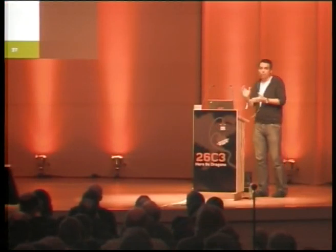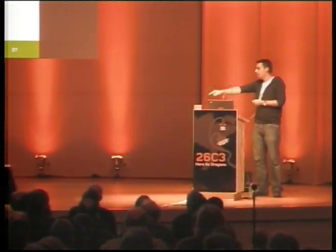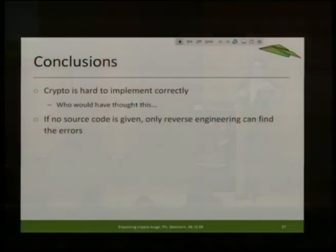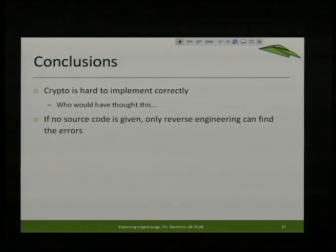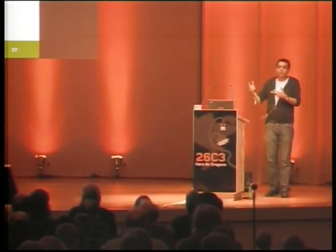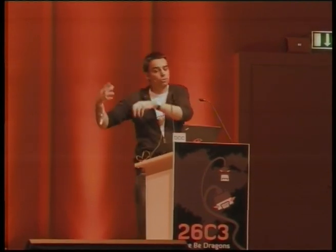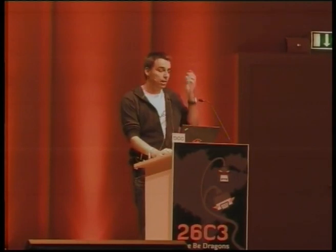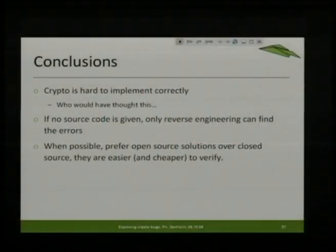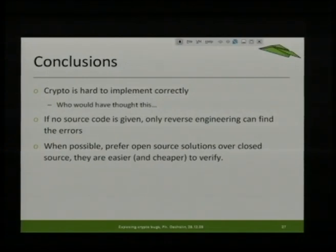If you don't have the source code, the only way to know if your data is well protected is to do reverse engineering. With reverse engineering you can find errors and say 'I can break your system because of that.' When you don't find an error you can validate they do the hash function many times, use salted hashes, and use Triple DES or AES correctly. Even so, you can never be certain there's no backdoor or other error you couldn't see. So if you have to choose a system to safeguard all your information, you should prefer open source free software solutions where it's much easier to find errors and much cheaper because you won't spend so much time trying to audit the system.